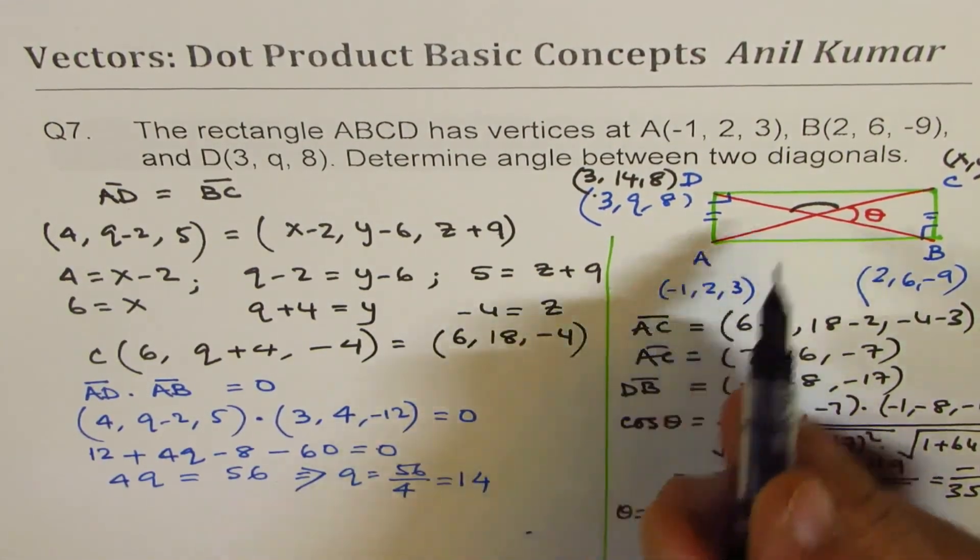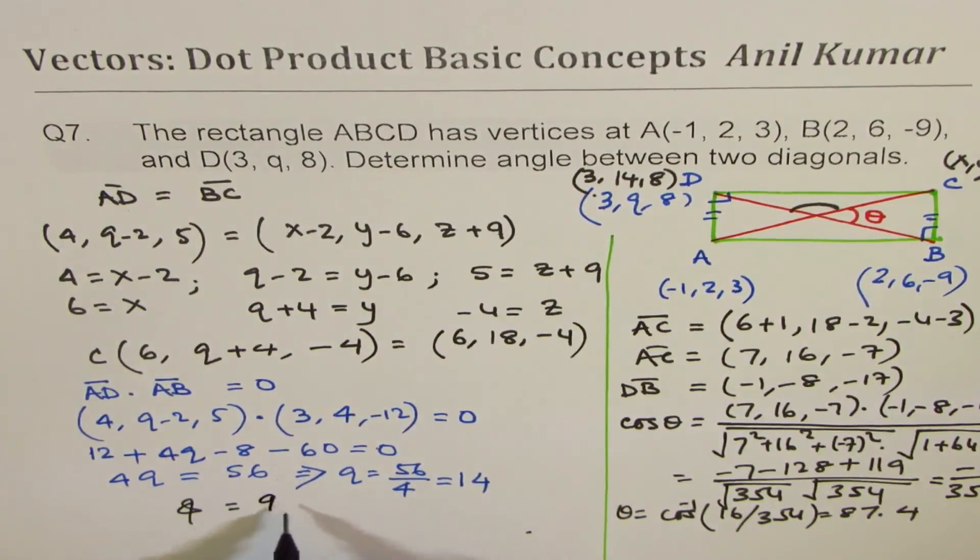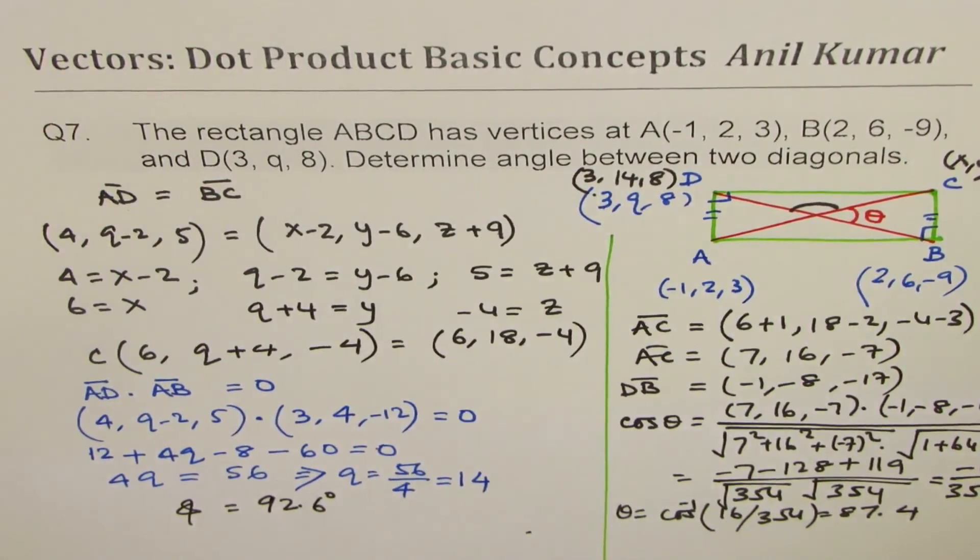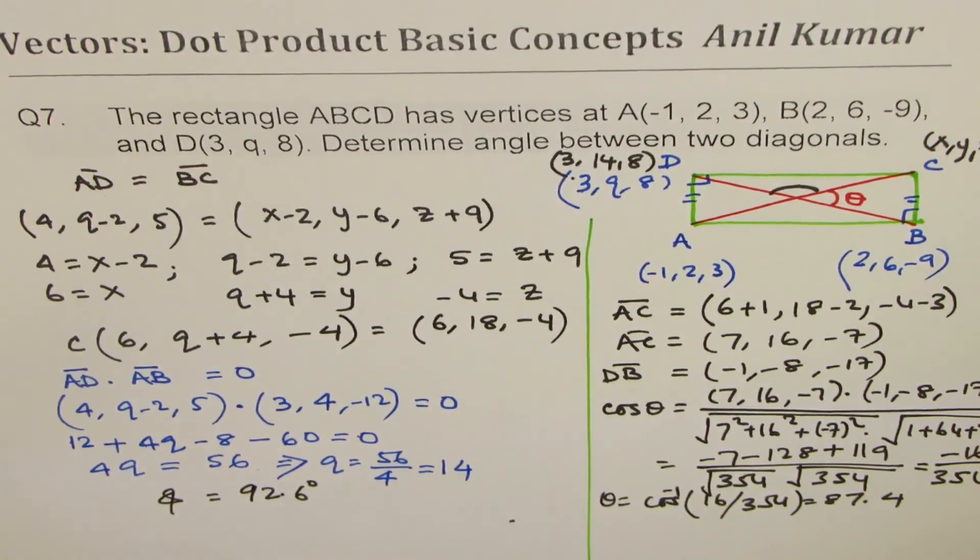So we can say the other angle phi equals 92.6°. So these are the two answers for the given question. I hope you have learned about dot products in this particular video. Feel free to write your comments, share your views, and if you like and subscribe my videos, that'll be great. Thanks for watching and all the best.